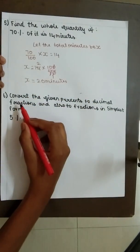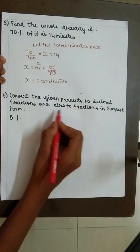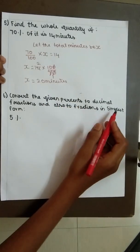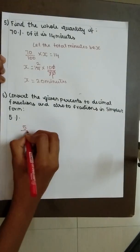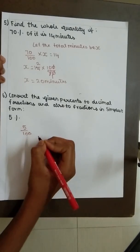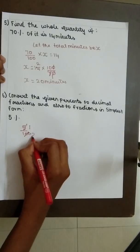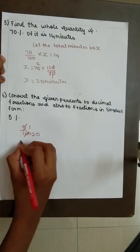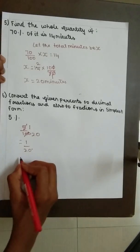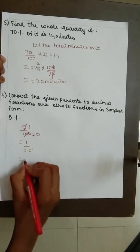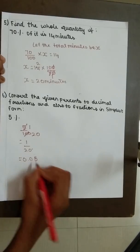Question number 6. Convert the given percent to decimal fractions and also to fractions in simplest form. 5%. 5 by 100. 5 one time, 100 twenty times, equal to 1 by 20. In decimal fraction, 0.05. Therefore, the answer is 0.05.